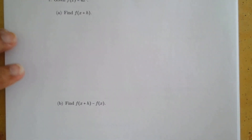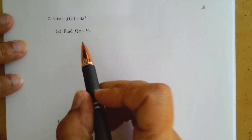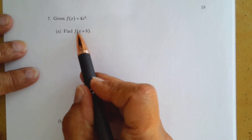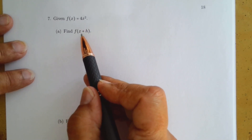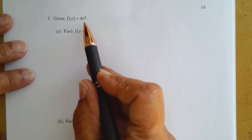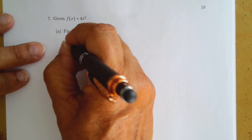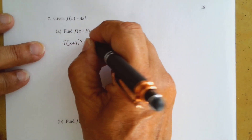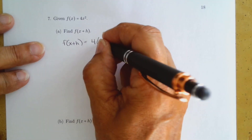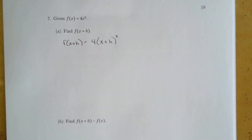Going back to part a, we're doing f of x plus h. The function given for number seven — let me slide my paper down — is f of x equals 4x². Remember, whatever is in the parentheses after f replaces the x in the function. So in place of x we put x plus h, giving us f of x plus h equals 4 times (x plus h) squared.